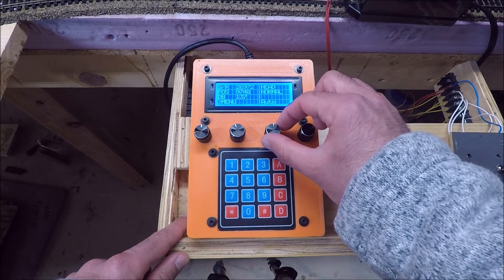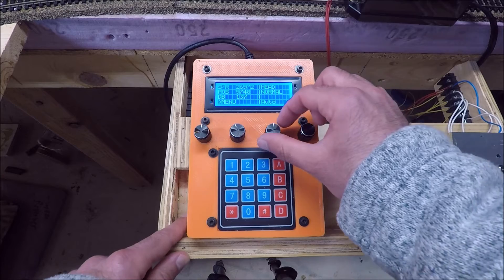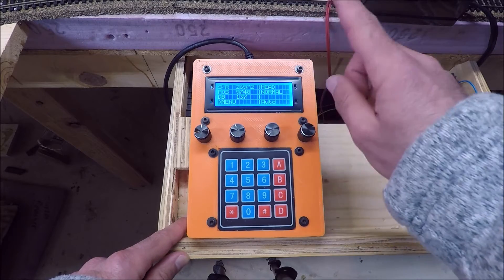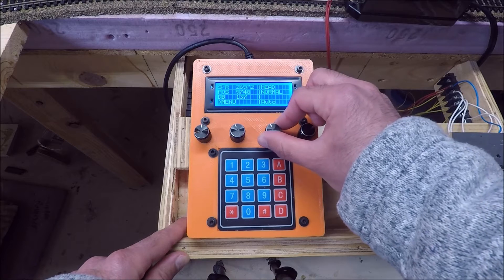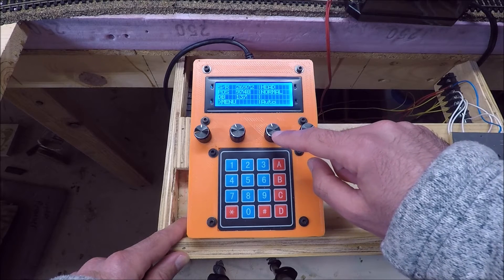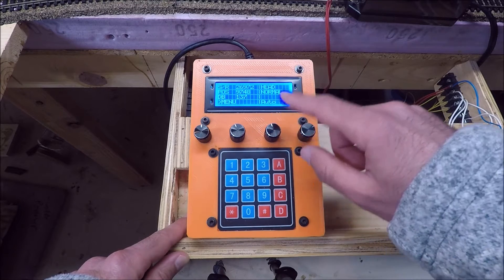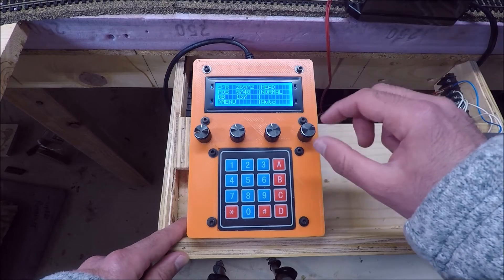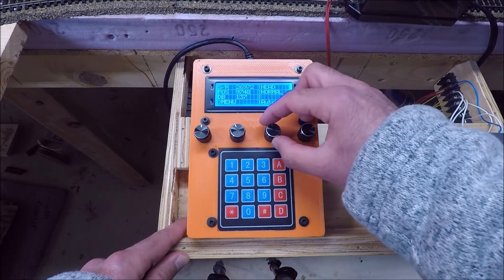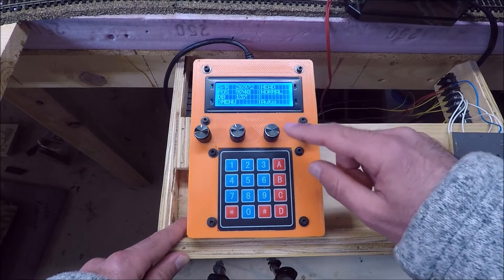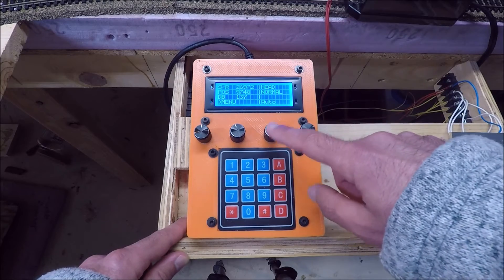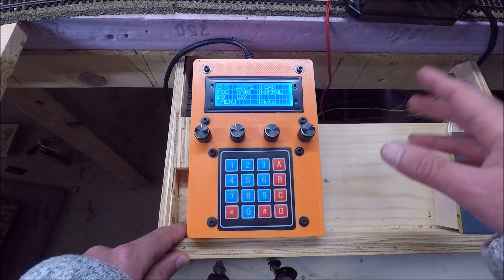Now this potentiometer right here controls the rate of that movement. So all the way to the left that's your step speed so it moves at one step at a time. You move it in the middle that's your jog speed. So that's a little bit faster than step speed but not as fast as travel speed. And that's good for whenever you're making minor adjustments in the turntable position. And all the way over here would be what I call run speed or travel speed. And that's how fast the turntable moves whenever it's running automatically or in auto mode.